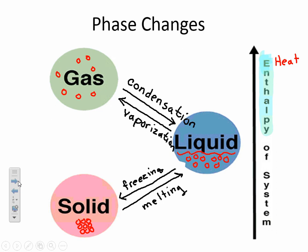Two terms that might be new: when a solid goes directly to a gas, that term is sublimation. Think about snow in winter — most of it disappears. What's really happening is your snow goes straight to the water vapor phase, and it's sublimating.